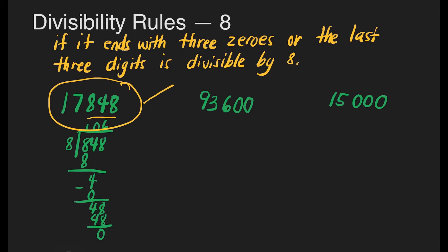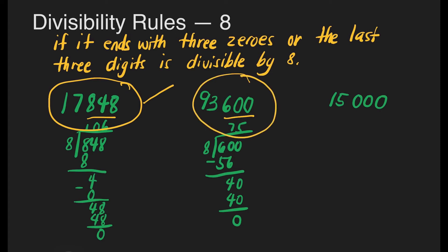Let us check the second number, 93,600. The last 3 digits is 600. Let's divide: 600 divided by 8. How many 8s are there in 6? None. Move to 60. How many 8s are there in 60? That's 7. 7 times 8 is 56. 60 minus 56 is 4. Bring down 0. How many 8s are there in 40? That's 5. 5 times 8 is 40. We don't have a remainder, so 93,600 is also divisible by 8.